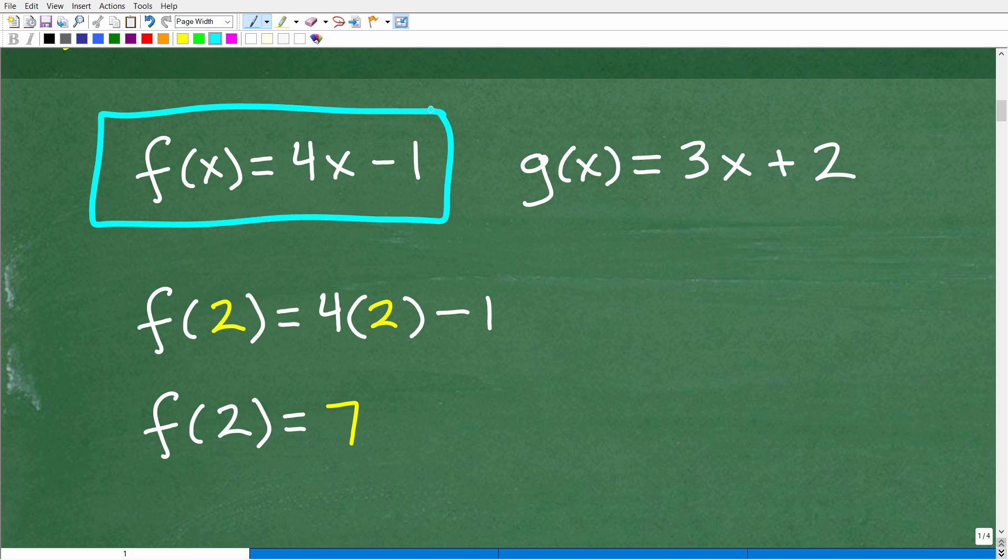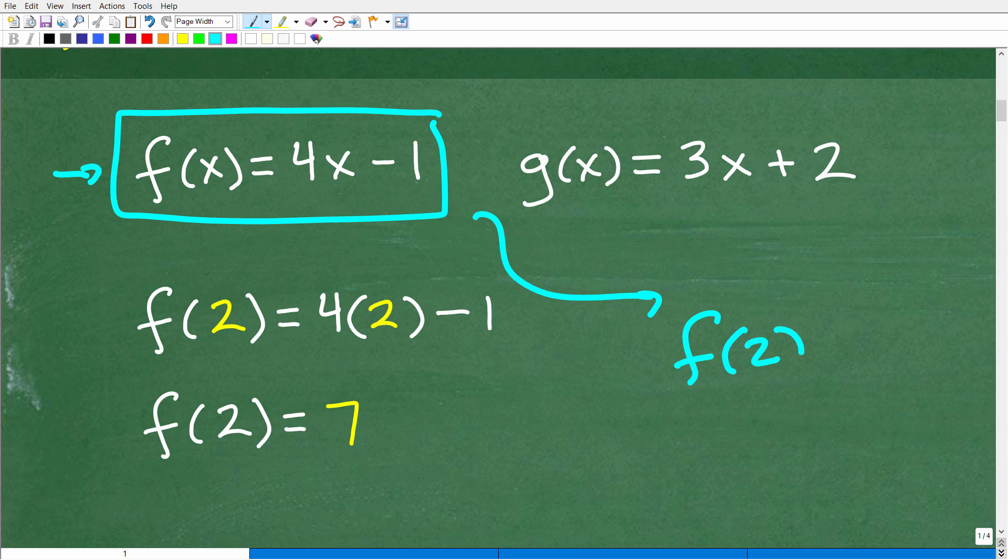Okay. So we have f(x) equal to 4x minus 1, and let's just evaluate this function right here for 2. In other words, I have this function, and we want to find f(2).